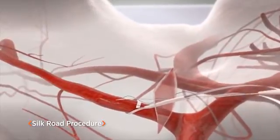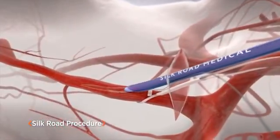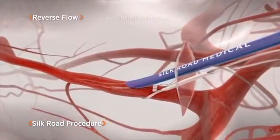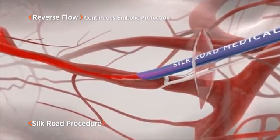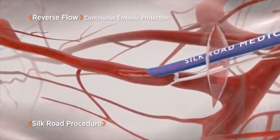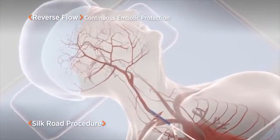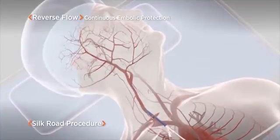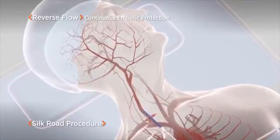A specialized sheath is placed through a small puncture in the artery. This sheath will be used to deliver a stent, but first it will temporarily reverse blood flow in the artery. Flow reversal keeps debris moving away from the brain, protecting it from dangerous emboli.